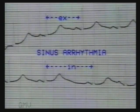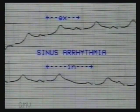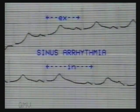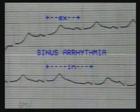In this ECG, which is a continuous strip, the RR interval varies from 16 small squares in expiration to 22 small squares in inspiration. But you will note that all PQRST complexes are normal. Each QRS complex is preceded by a P wave with fixed PR interval, indicating sinus rhythm.